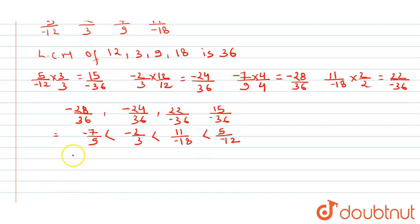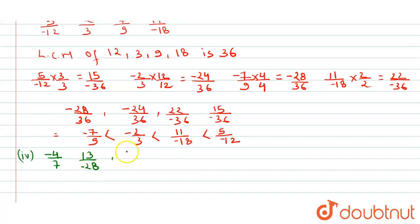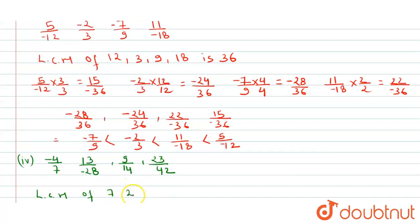For the fourth question, the numbers given are: -4/7, 13/(-28), 9/14, and 23/42. We follow the same process. The LCM of 7, 28, 14, and 42 is 84.